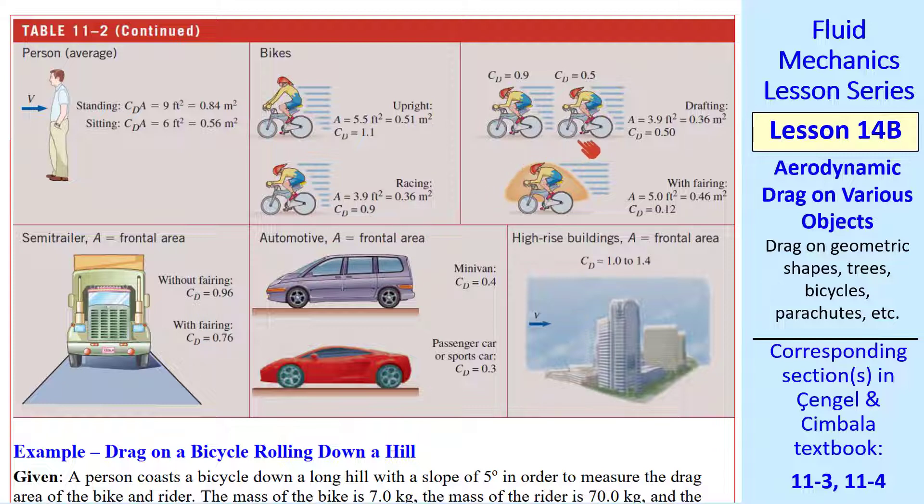When two bicycles are drafting, the second one has a much lower drag coefficient than the first one. A well-designed fairing can decrease the drag coefficient significantly. The same thing is true for trucks. Now it's rare to find a truck without a fairing. We've already talked about automobiles in a previous lesson. Buildings are typically pretty boxy, so it's not surprising that CD is around one or greater, depending on the shape.